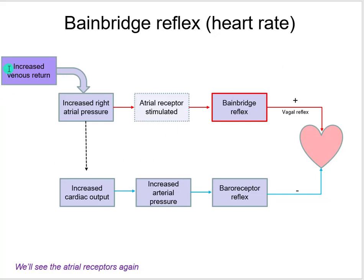An increase in venous return increases right atrial pressure. Atrial receptors are stimulated and kick in the Bainbridge reflex, signaling the SA node to increase heart rate. That increased heart rate raises cardiac output. The increased atrial pressure then triggers a baroreceptor reflex that calms the heart down, demonstrating opposing voices on the same end organ — which is how feedback loops are set up. The key takeaway: increased venous return increases heart rate via the Bainbridge reflex.